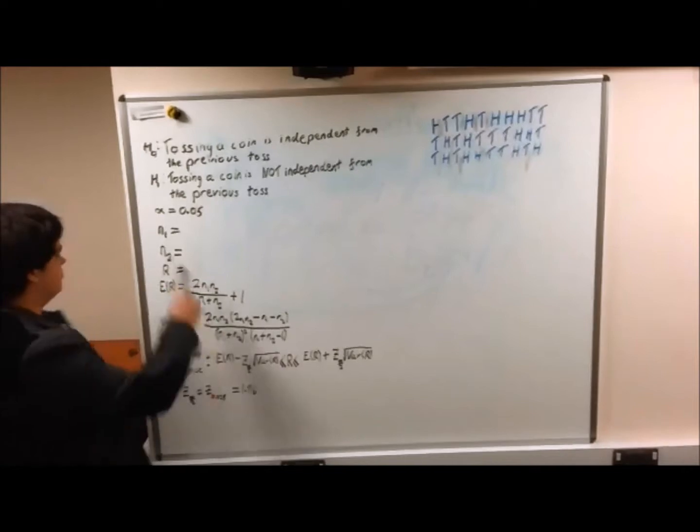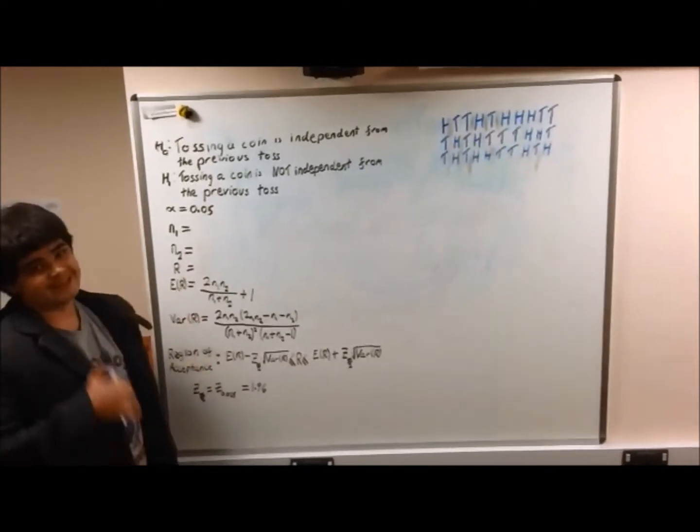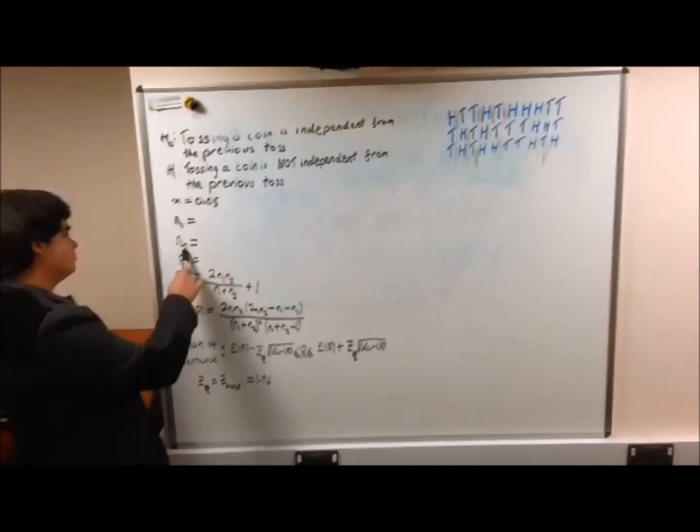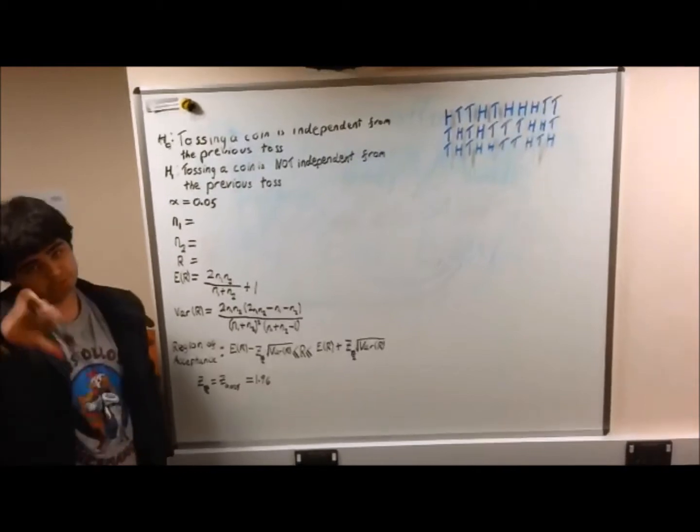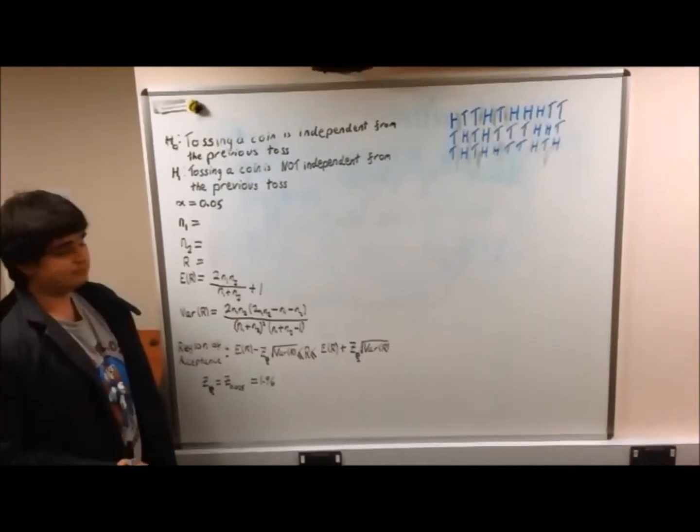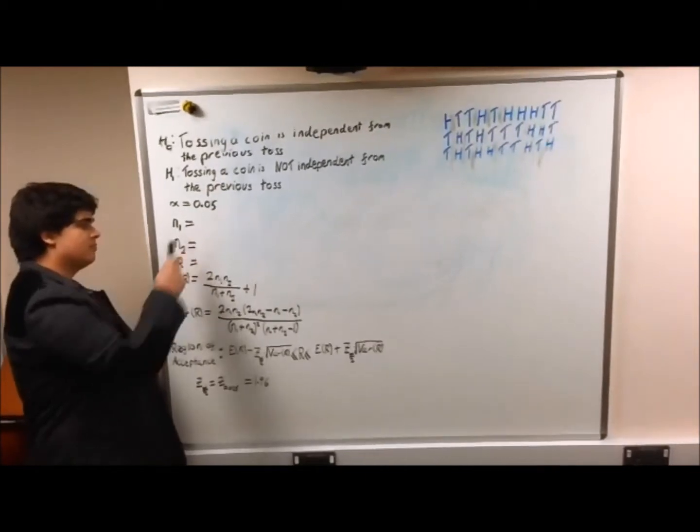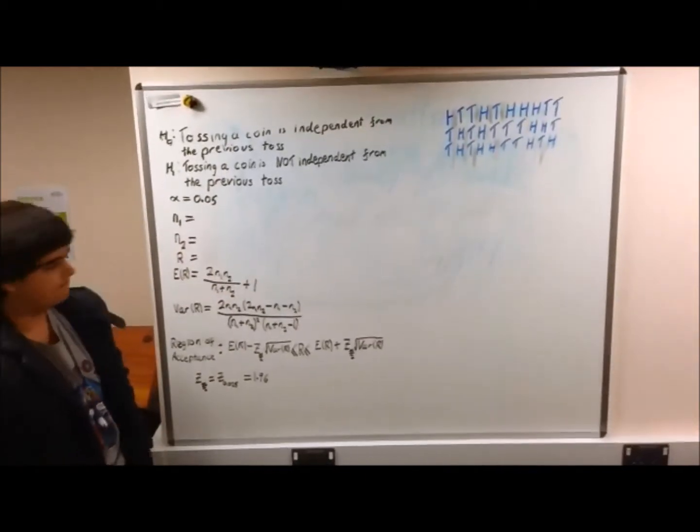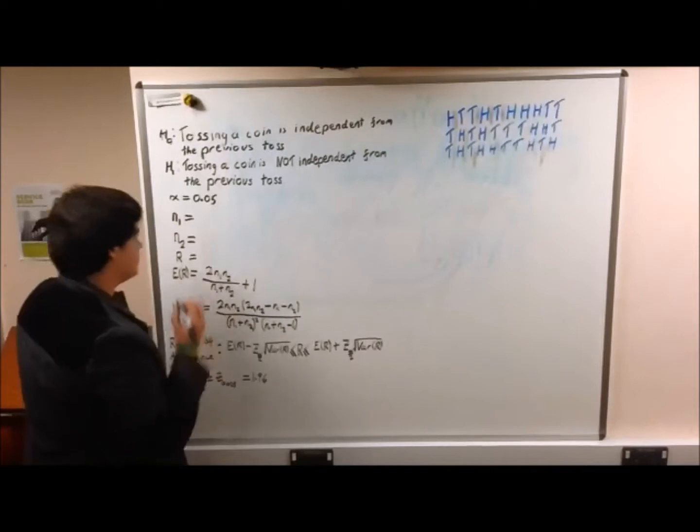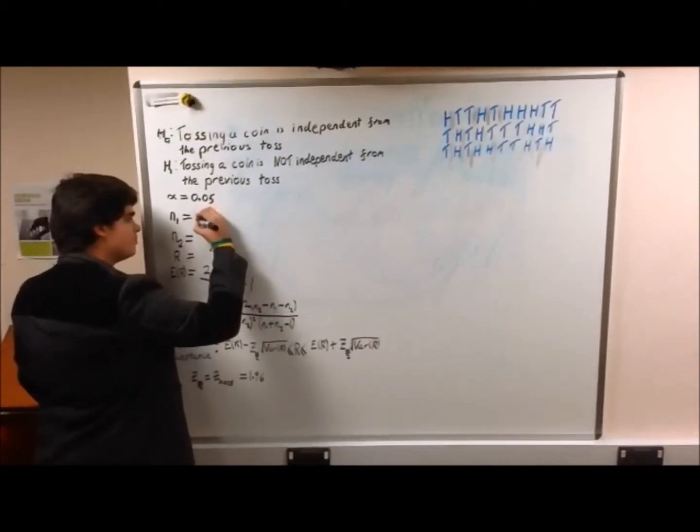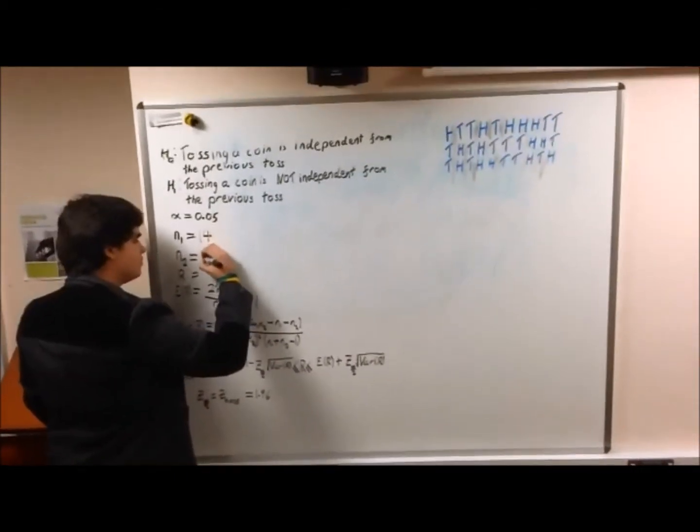N1 represents all of the positive outcomes and N2 represents all of the negative outcomes. In this case, we will select heads as positive, although you can pick either. Therefore, our results show N1 equals 14 and N2 equals 16.